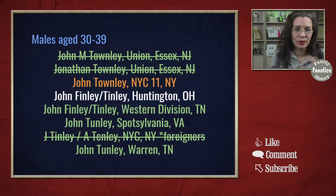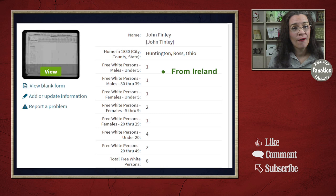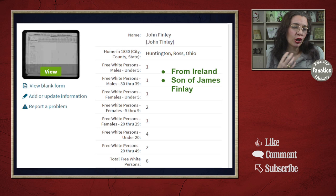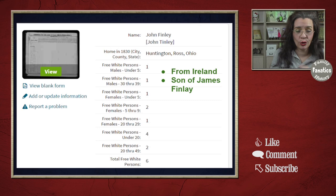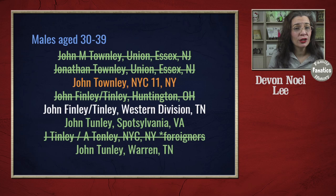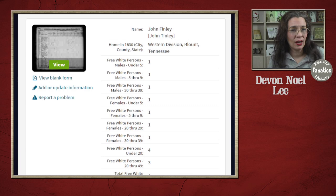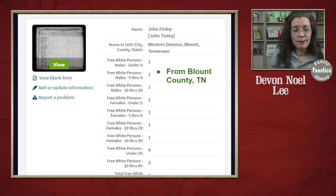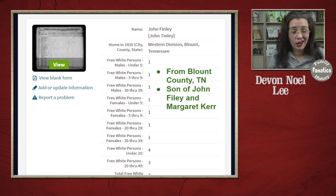Next, we move on to John Finley in Huntington, Ohio. When I did a little digging into him, I discovered that he was from Ireland and the son of James Finley. So this is a case where yes, the name could have been confused with Townley depending on how it got recorded and indexed, but he's from a different surname and a different location — he can't be the son of Effingham of Elizabethtown. I moved on to another Finley, and based on the first one I highly doubted it would flip to a Townley. I was right — this man from Blount County, Tennessee is the son of John Finley and Margaret Kerr of Tennessee. He cannot be Effingham's son.